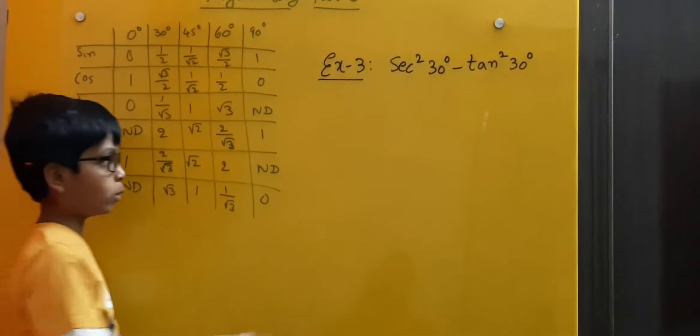Is equal to, here 2 into 1 by root 3 is equal to 2 by root 3. Here now let us simplify this. 1 square is 1 by root 3 square is root 9 which is 3.